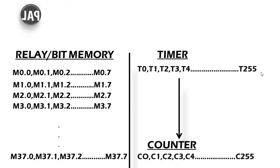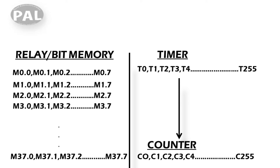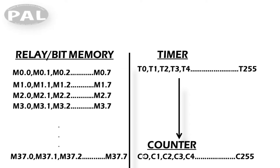For timers, the range is T0 to T255 — that means 256 timers are available in any single module. Counters are similar: C0 to C255, also a huge number. Memory addresses without further specification are in milliseconds. This is important for any beginner to understand the addressing of timers and counters.